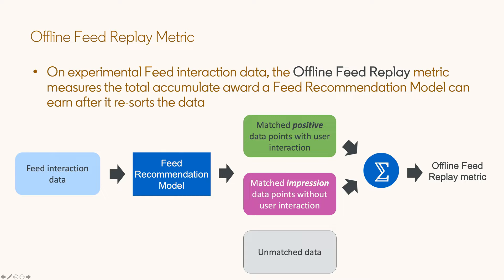Let's give a nutshell on how a feed recommendation model can be evaluated with our offline simulation tool, offline feed replay. First, we collect a lot of experimental feed interaction data from real online sessions, which includes the member, the updates, and the interaction label. Then, after we train a feed recommendation model, these experimental data are re-ranked by the new trained model. We pick up the data points in which the re-ranked position remains unchanged compared to their original position. We then accumulate the feed replay rewards on all these matched data points and normalize by the total number of matched data points. This matrix shows how the MVA score can improve online engagement in an offline experiment.